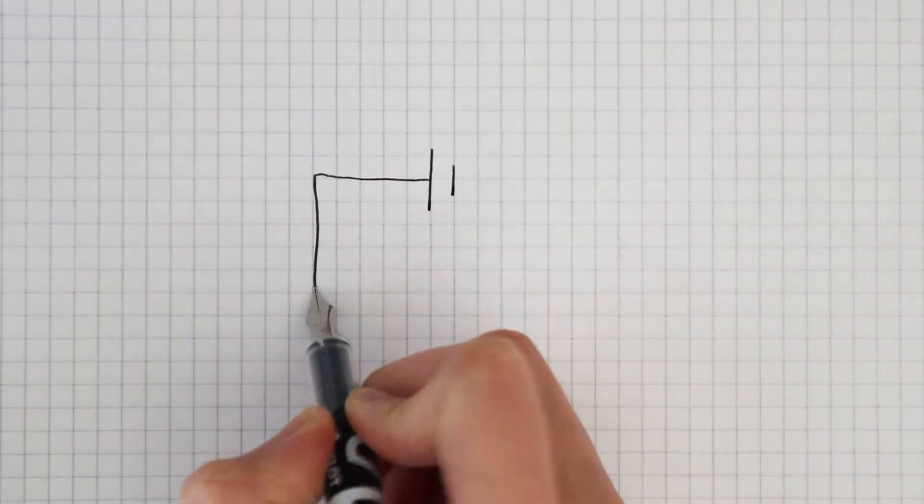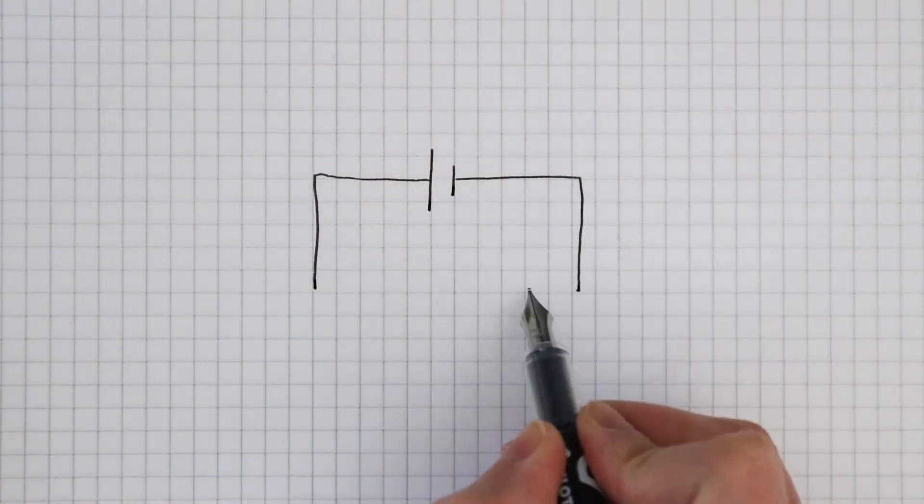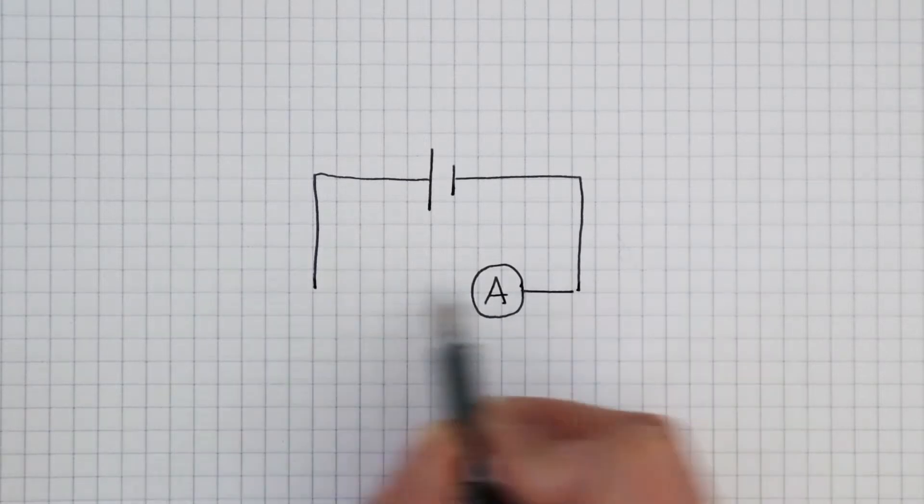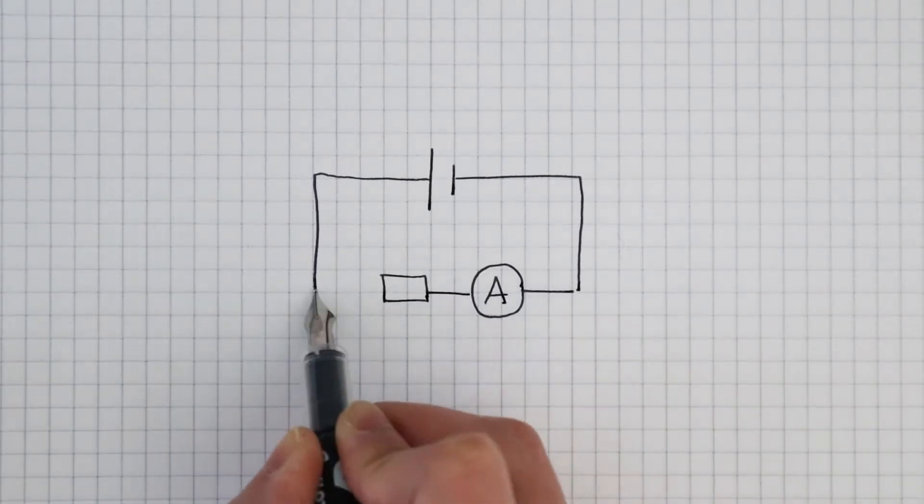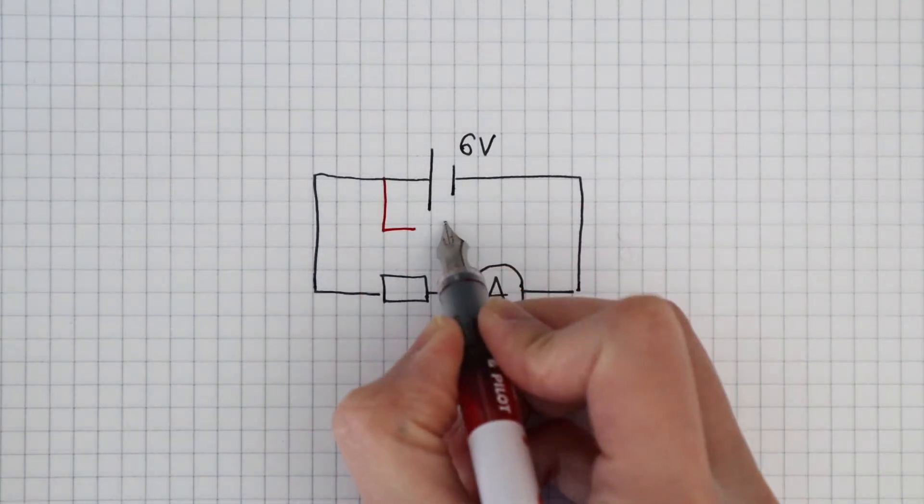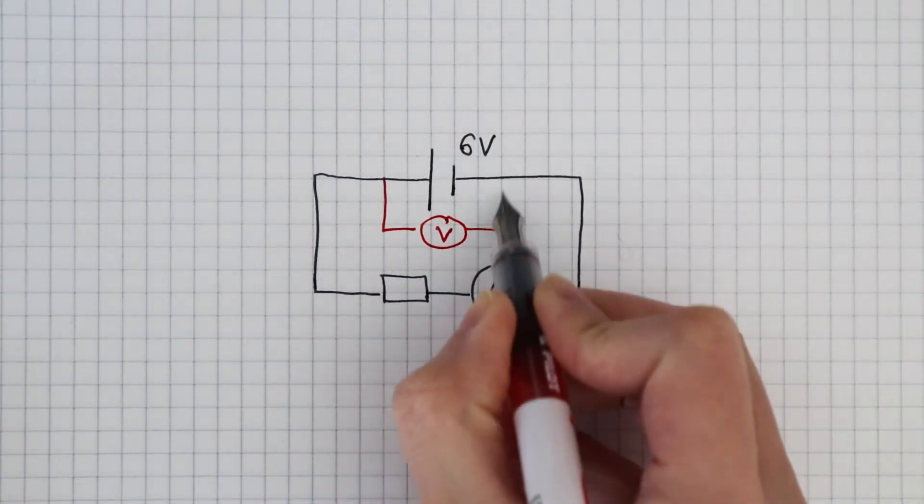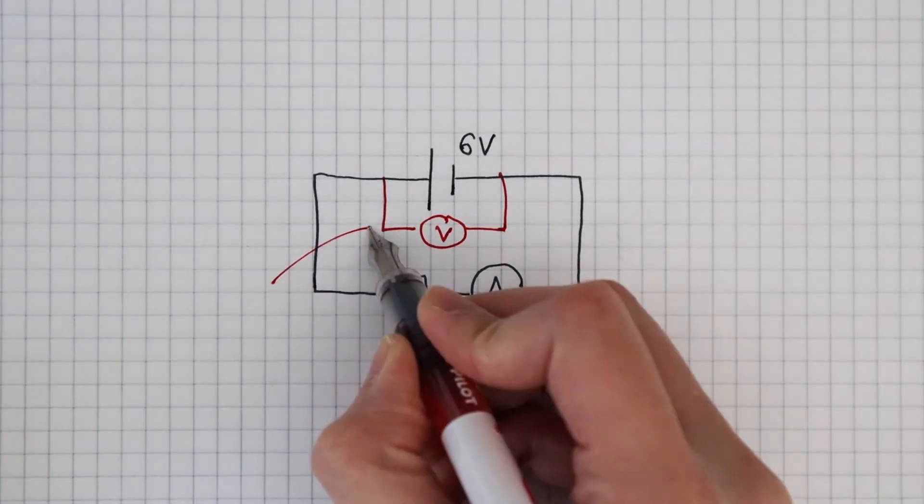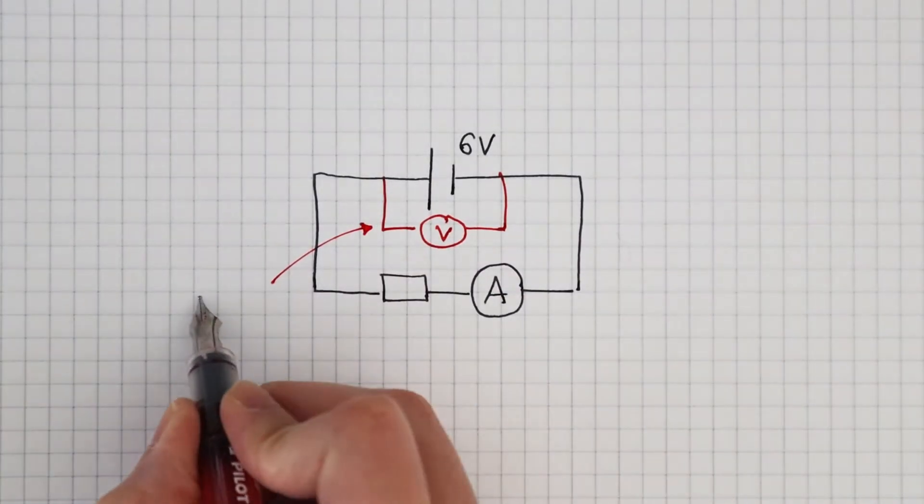Here's a circuit with a 6-volt cell connected in series with an ammeter and a resistor. If I add a voltmeter across the terminals of the cell, I can measure the voltage that the cell supplies to the circuit.